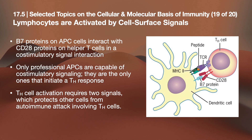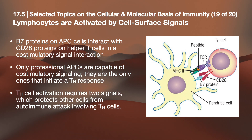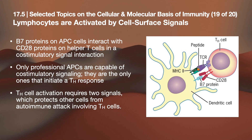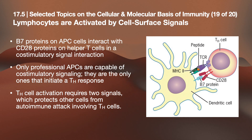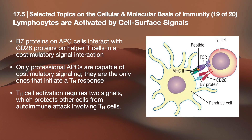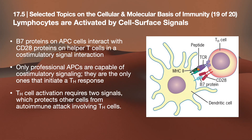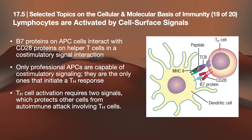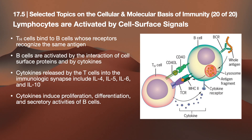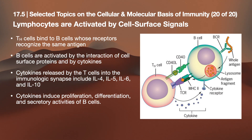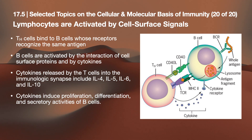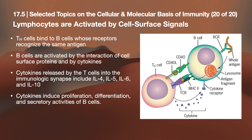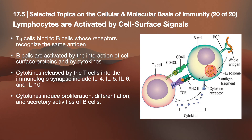Lymphocytes are activated by self-surface signals. B7 proteins on APC cells interact with CD28 proteins on helper T cells in a co-stimulatory signal interaction. Only professional APCs are capable of co-stimulatory signaling and are the only ones that initiate the helper T cell response, which requires two signals — protecting other cells from autoimmune attack. Helper T cells bind to B cells whose receptors recognize the same antigen. B cells are activated by the interaction of cell surface proteins and by cytokines released by T cells into the immunological synapse, including IL-4, IL-5, IL-6, and IL-10, inducing proliferation, differentiation, and secretory activities.